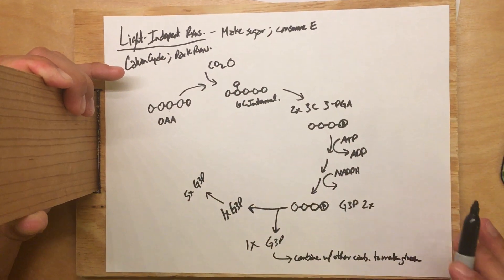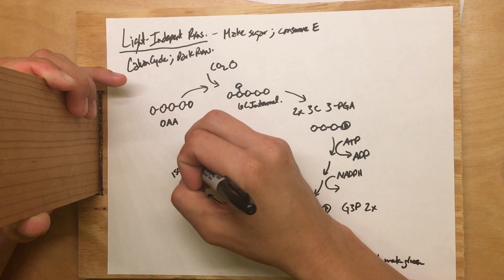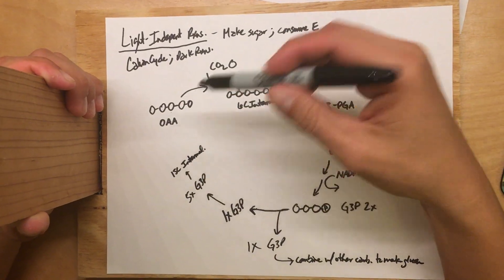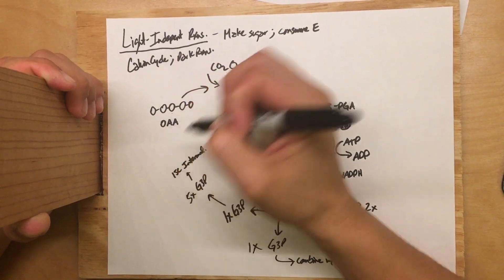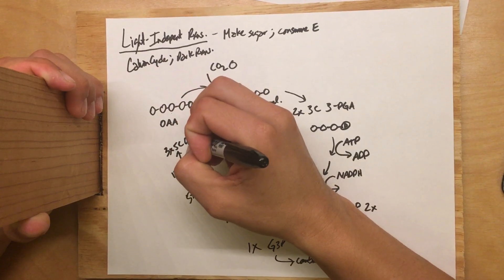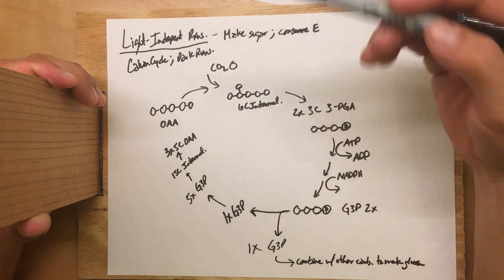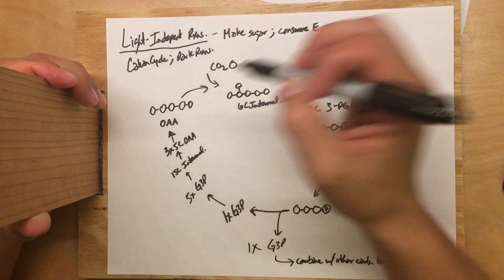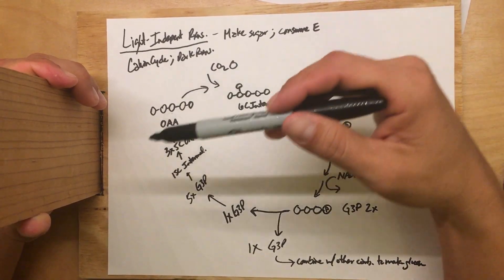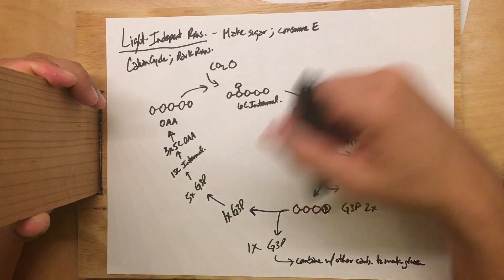What's going to happen is that five of these G3Ps are going to get together and make one huge 15-carbon molecule. It's just an intermediate — it won't hang around very long. But that 15-carbon intermediate is then going to break in two locations to produce three five-carbon OAAs. So: five times three equals fifteen, and fifteen divided into three pieces gives three five-carbon OAAs. We've remade what we began with, so we can go through the whole cycle again.